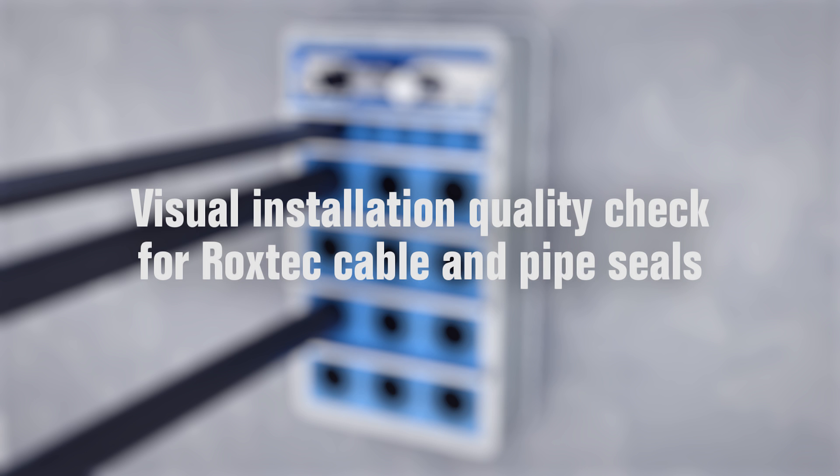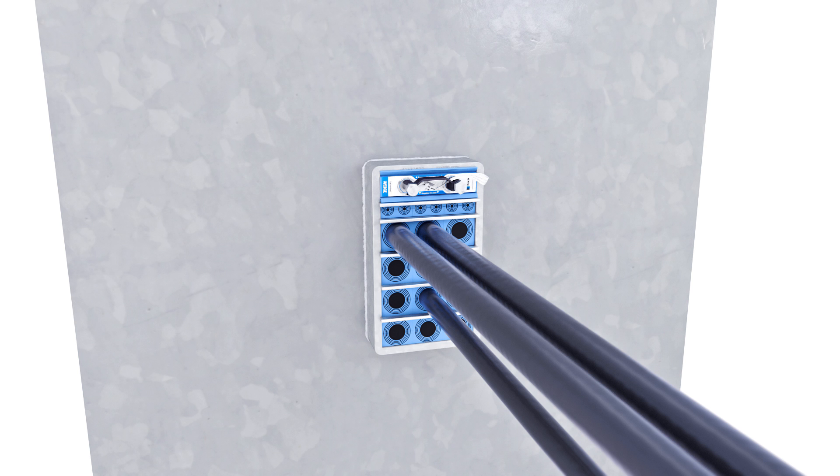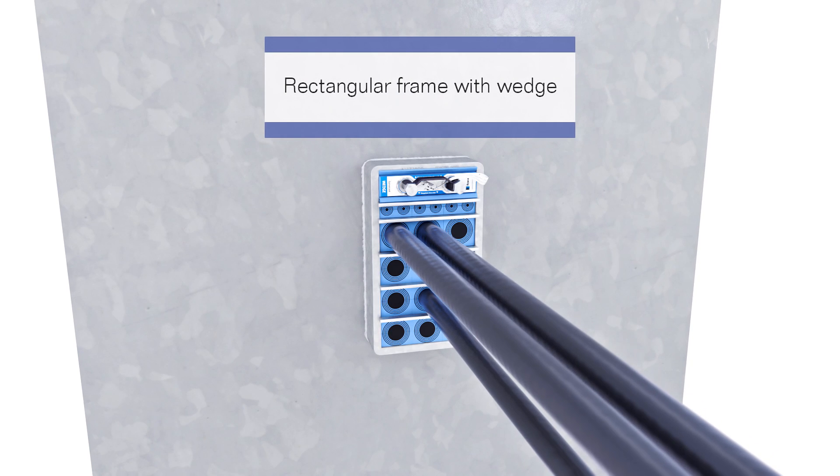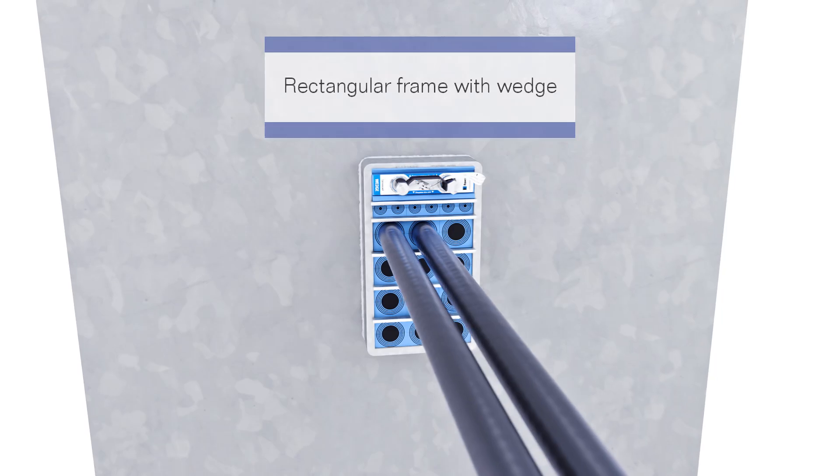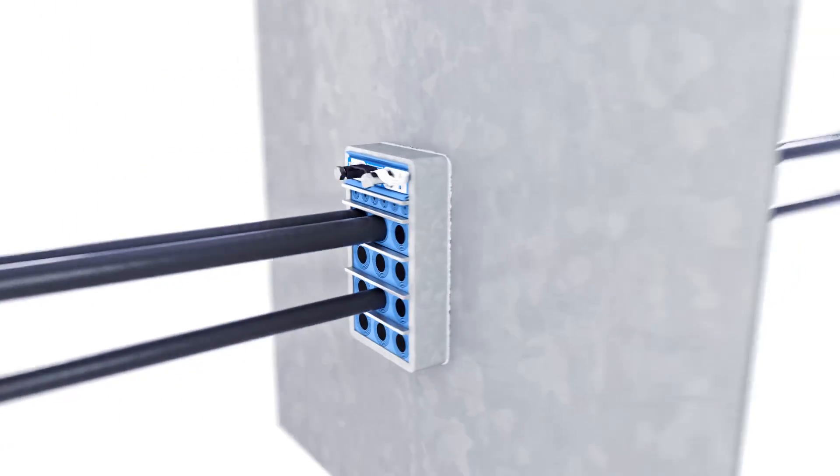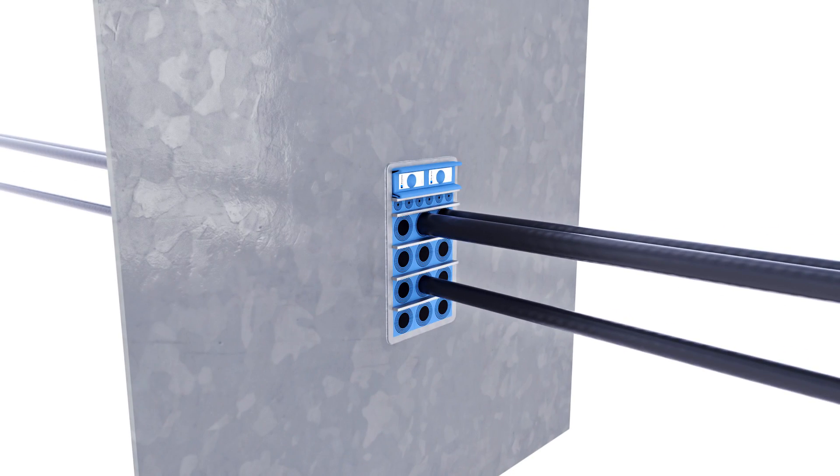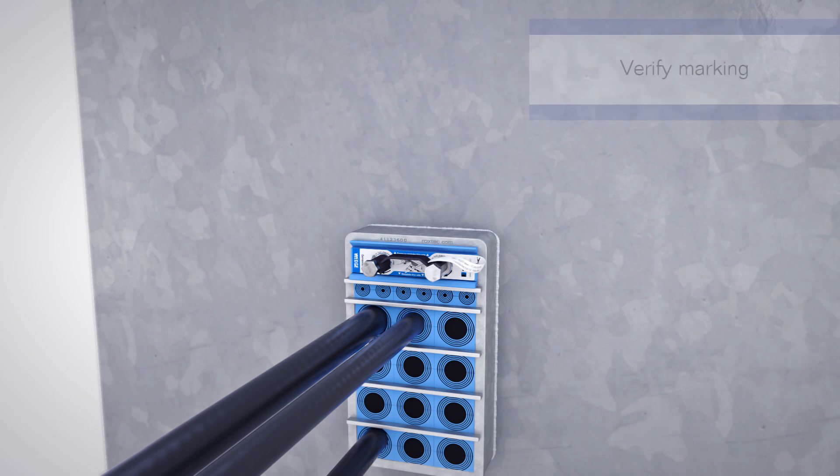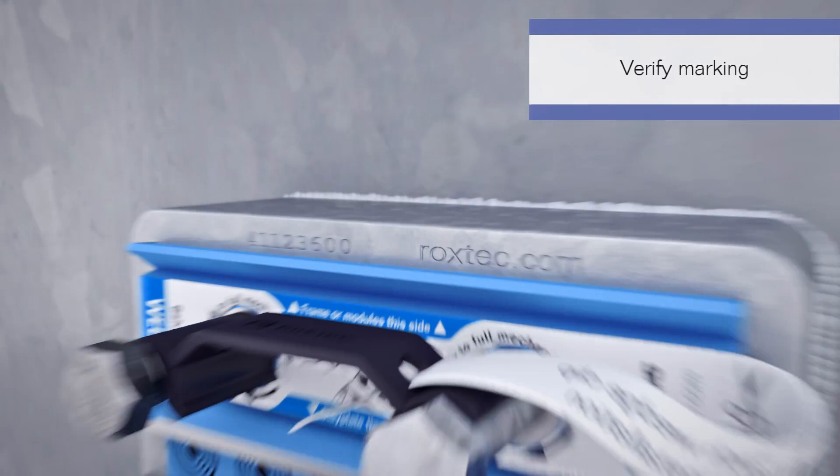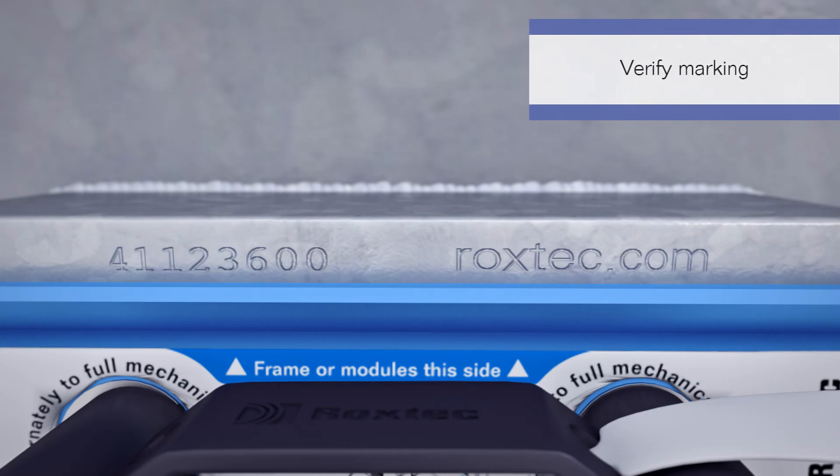Let us guide you along the way. This is how you check the installation quality for a rectangular Roxtec frame with wedge. If possible, check the transit from both sides. If possible, verify the marking to make sure that you use an original Roxtec frame.